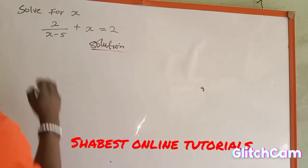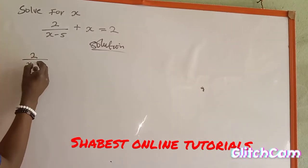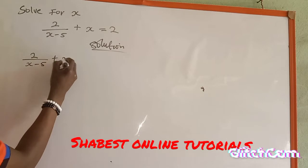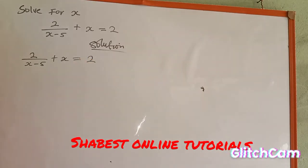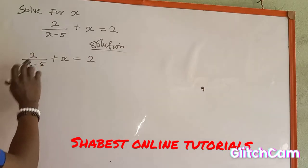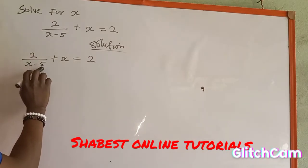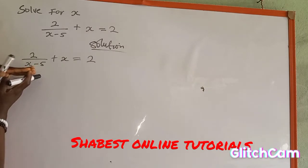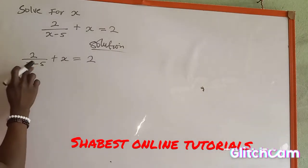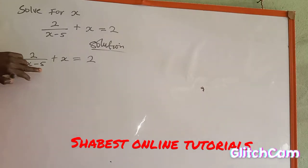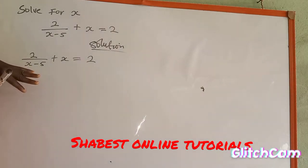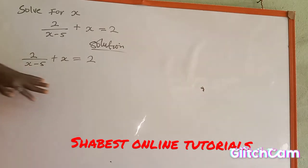The equation is 2 over s minus 5 plus s equal to 2, and we are asked to look for the value of s. What we are going to do first is identify the denominator. We have 2 over s minus 5, which is a fraction, so the only denominator here is s minus 5.